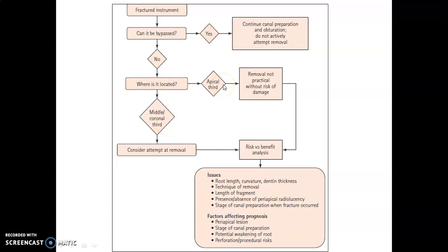This is a decision tree for case-based questions. When there is an instrument fracture, first assess if it can be bypassed — if yes, continue canal preparation and obturation without actively attempting removal. If no, locate where it is: if in the middle or coronal third, attempt removal. If in the apical third, removal is not practical without risk of damage. Factors to consider include root length, curvature, dentine thickness, technique of removal, length of fragment, presence or absence of periapical radiolucency, and the stage of canal preparation when separation occurred.